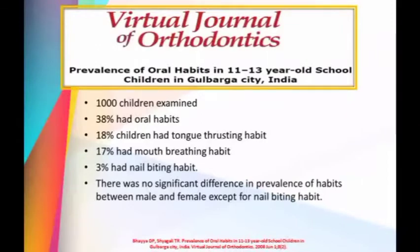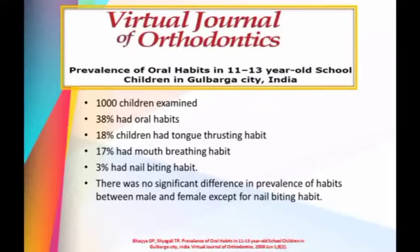Regarding the prevalence of tongue thrusting habit, a study published in the Virtual Journal of Orthodontics on oral habits in 11 to 13 year old school children in India examined 1000 children. From that, 38% had oral habits, and out of which 18% had tongue thrusting, followed by mouth breathing and nail biting habits. There was no significant difference in the prevalence between males and females, except for nail biting habits.